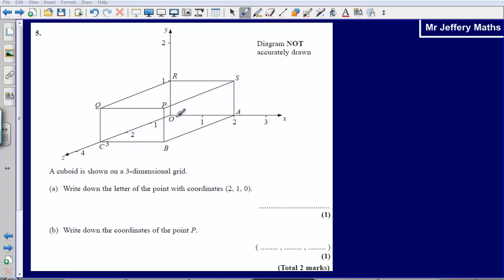So we've been told to go 2 along the x-axis, 1 up on the y-axis, and then 0 out on the z-axis. And so that is going to be point S.